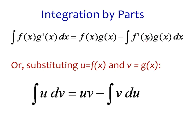This is the last line from the previous slide, and a lot of times you'll see this represented in terms of u and v, where u is f(x) and v is g(x). If we do that substitution, a more concise way of representing integration by parts is: the integral of u dv equals uv minus the integral of v du. This is typically how you'll see integration by parts represented, and it all comes from the product rule of derivatives.